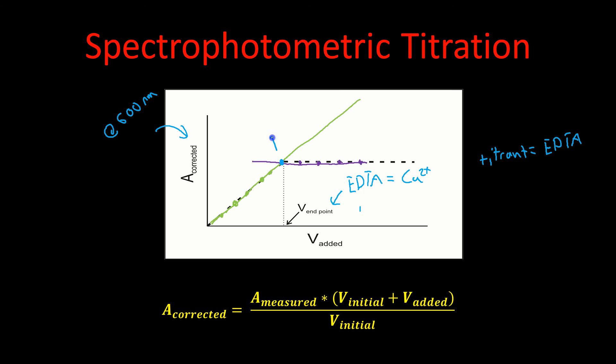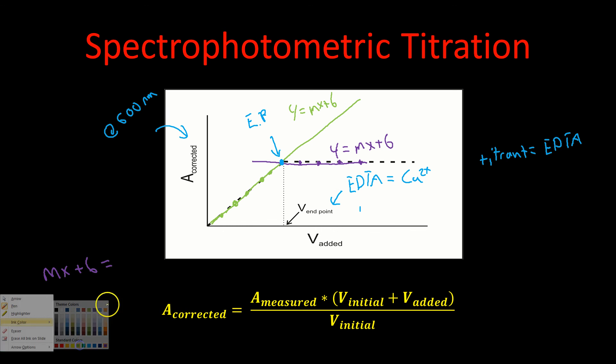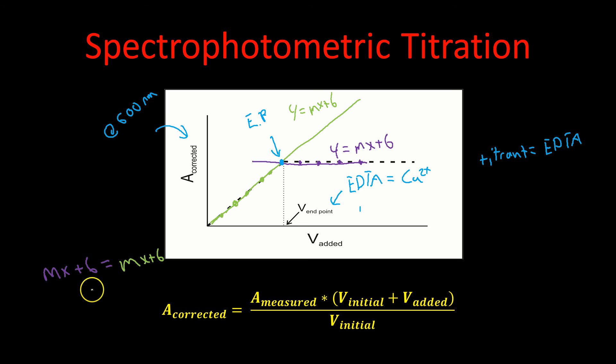You can actually solve that mathematically. You're going to get for your one line a y equals mx plus b. And for your purple line, which is after the equivalence point, you'll also get a separate y equals mx plus b. If you set them equal to each other and solve for x, you have your purple line mx plus b equals your green line mx plus b. You rearrange this, you solve for x, and that will tell you what your concentration is right here at your endpoint, because that is the point where these two cross, where the y's are equal to each other.